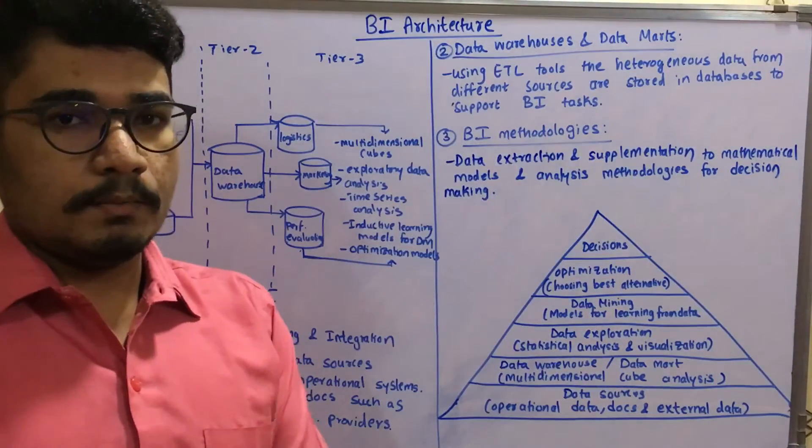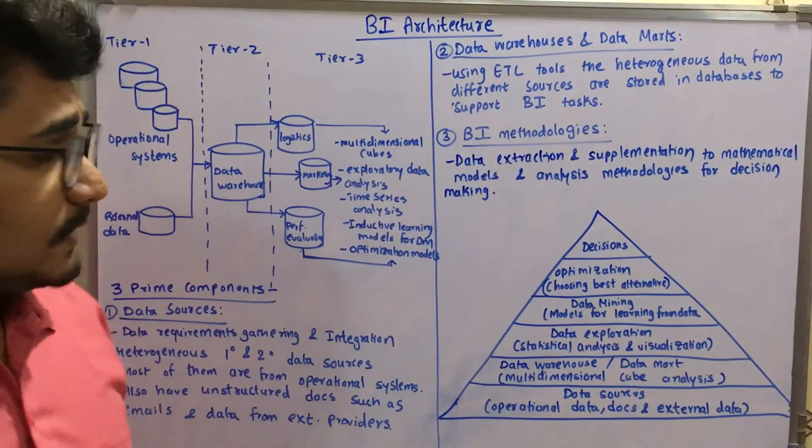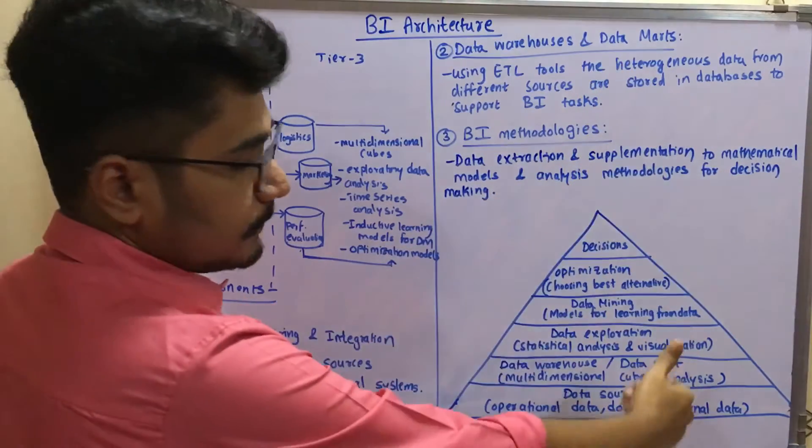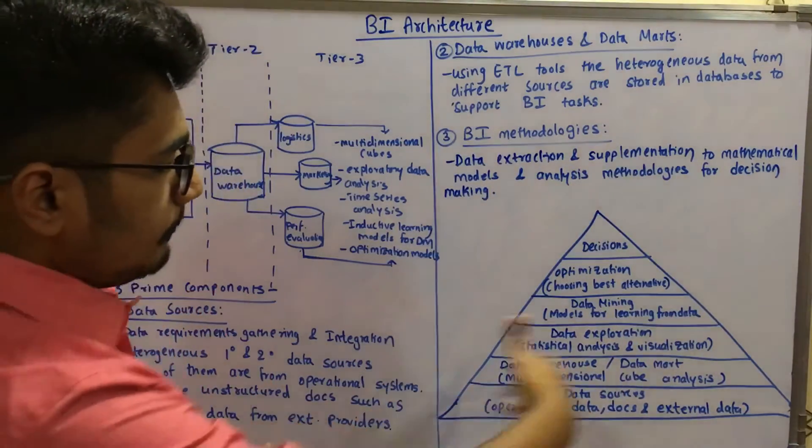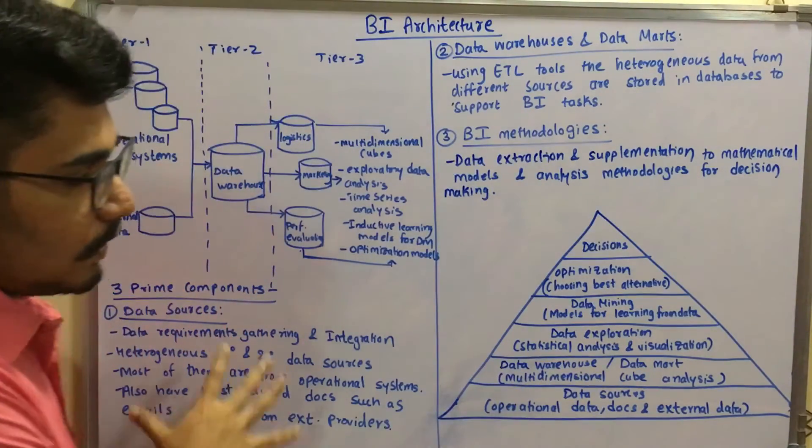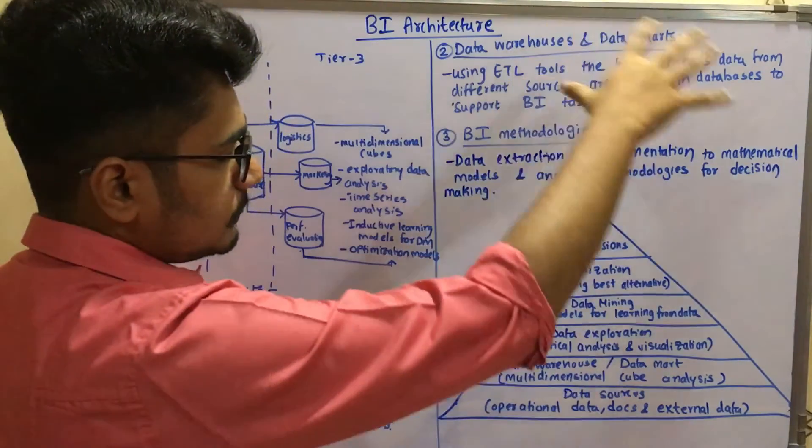So this was a short introduction regarding the BI architecture and this is the primary principles or components of how the decision making works. It's not from the top down, it works from the bottom up approach. At the base you have the data sources, that is data from operational data docs and external data.